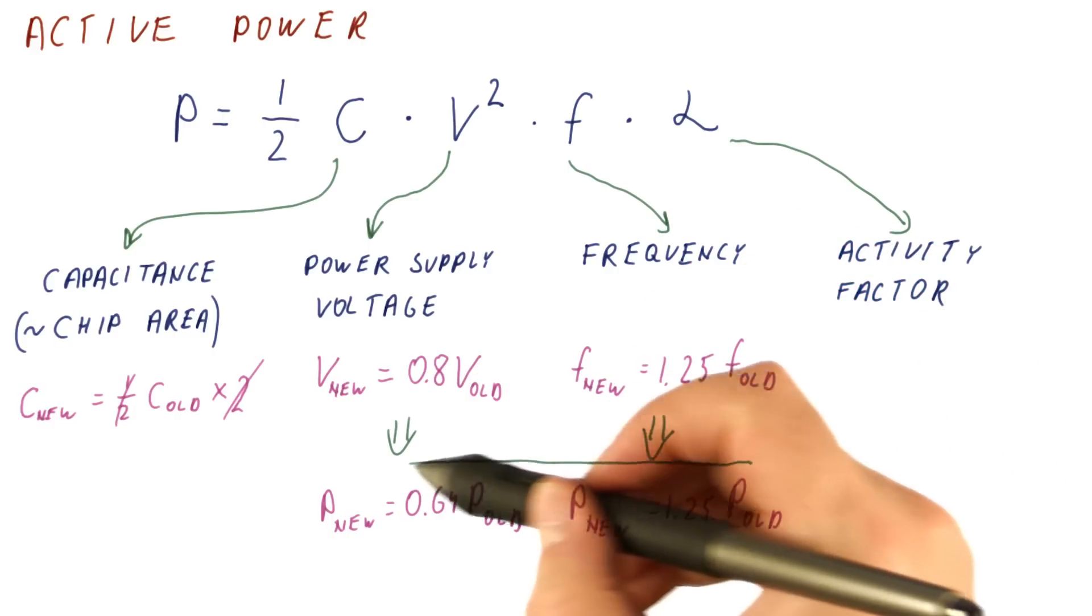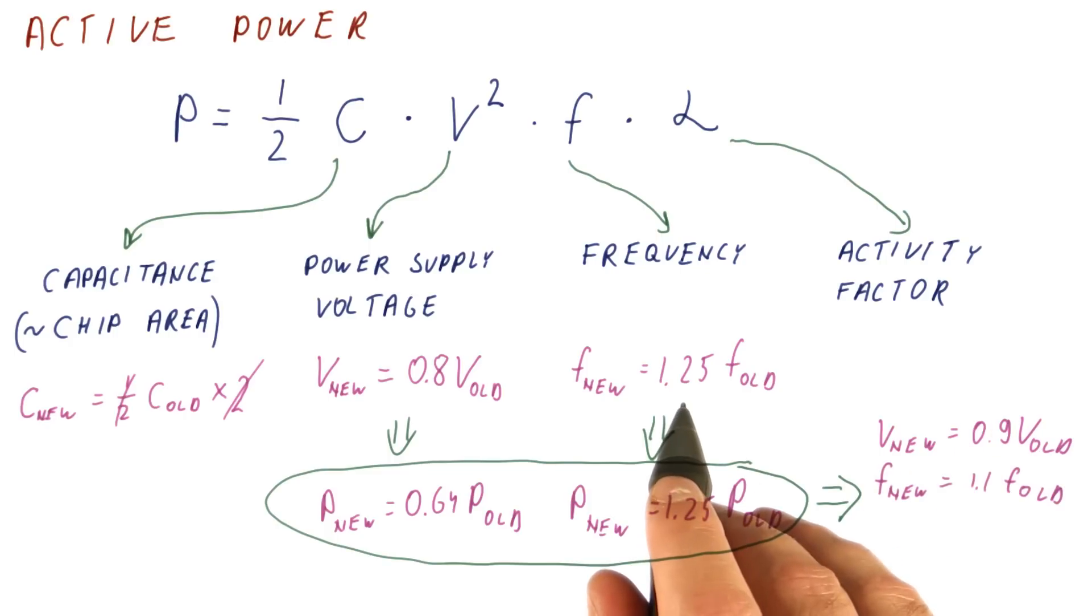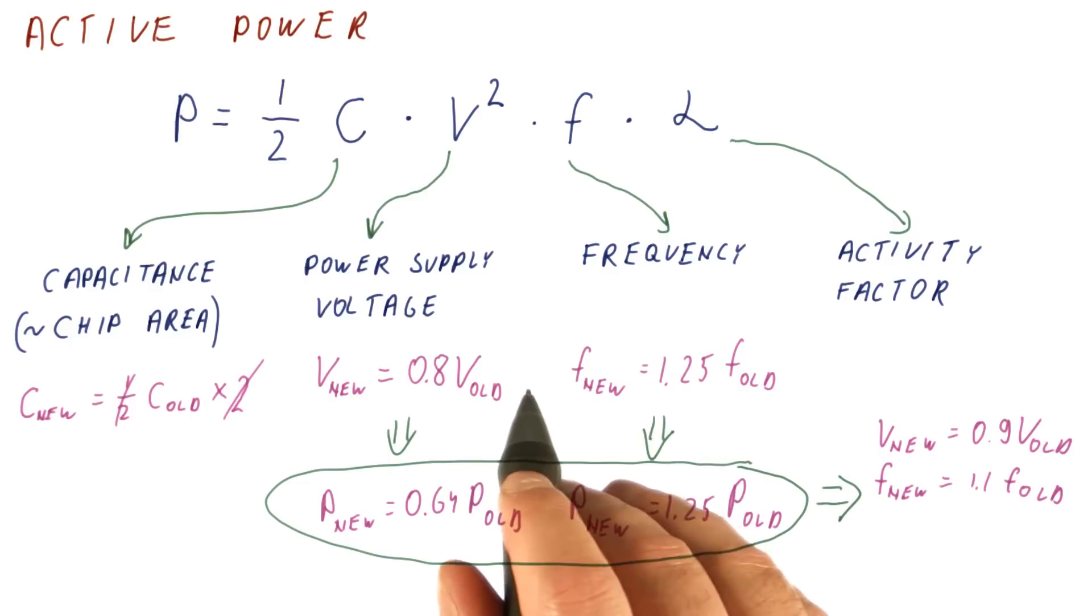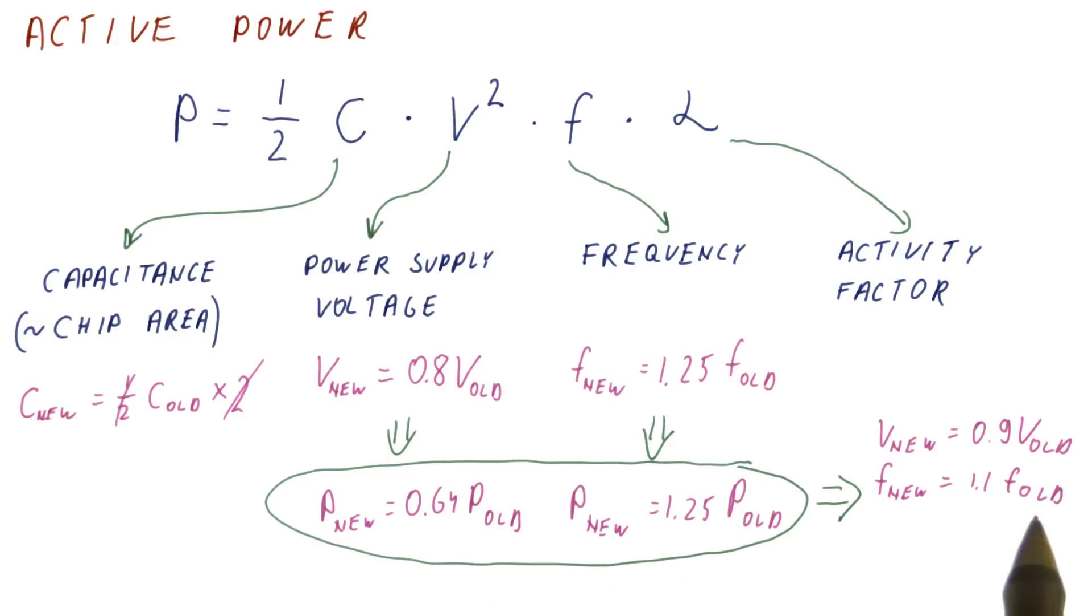If we put these two together, we can get something like the voltage. We don't lower it as much because if we did, then we couldn't also increase the frequency, so we lower it only a little bit. The frequency, we cannot increase it as much because if we did, we would have to keep the same power supply voltage as before. So let's say we only increase the frequency by a factor of 1.1.